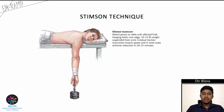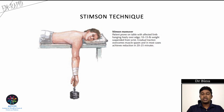In the Stimson technique, the patient is placed prone with the affected limb hanging freely over the edge of the table. About 10 to 15 pounds (5 to 7.5 kg) of weight is suspended from the wrist, and gradual traction from gravity relieves muscle spasm — usually achieving reduction in about 20 to 25 minutes. Although time-consuming, this is a safe, effective, and easy-to-learn technique.